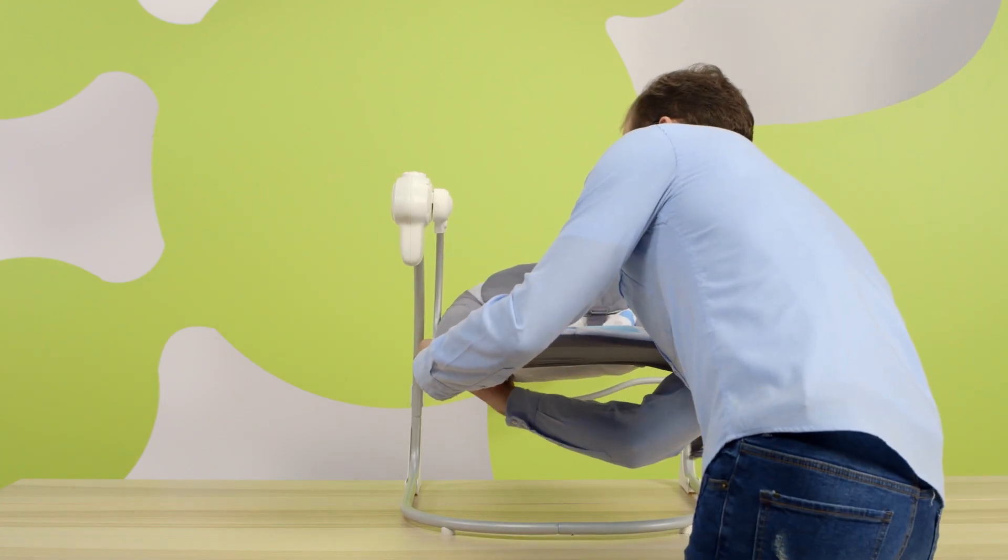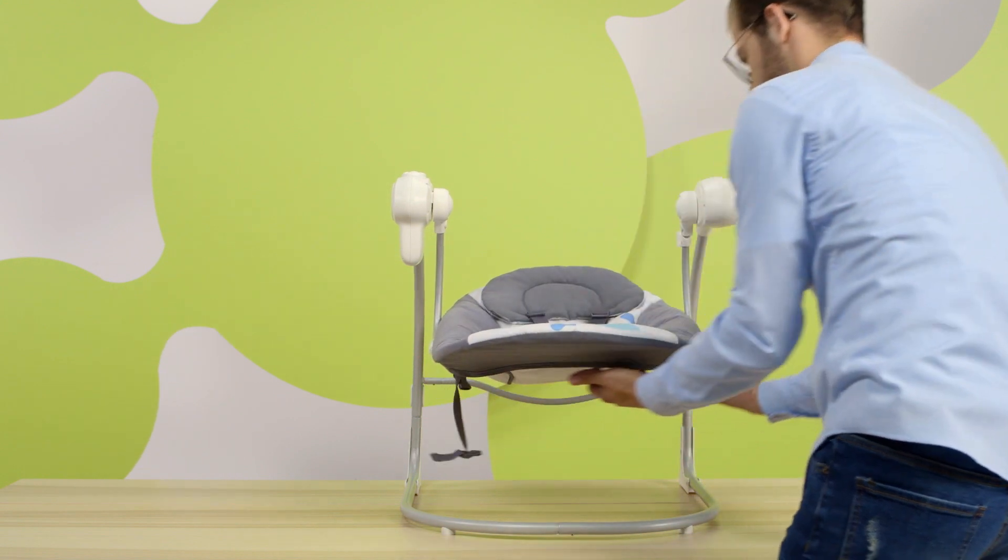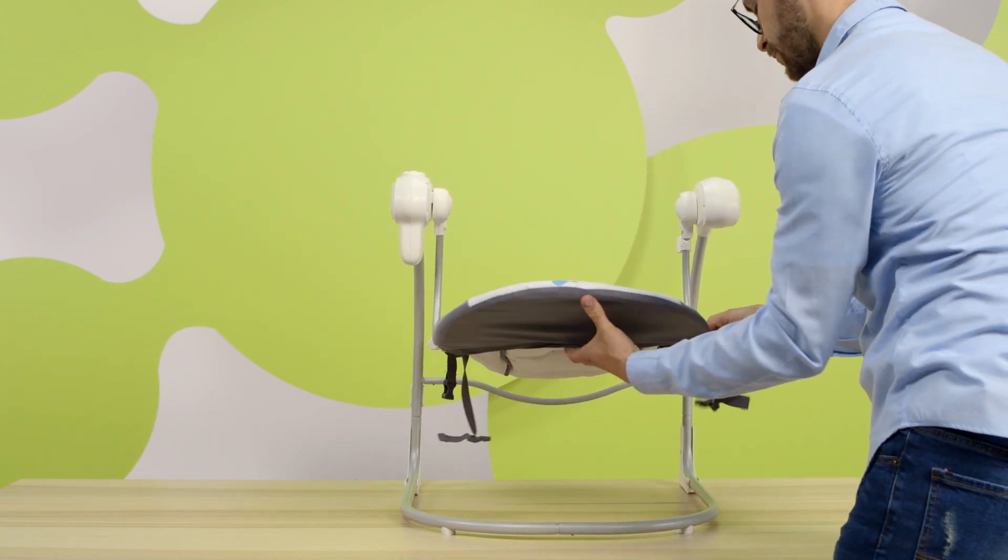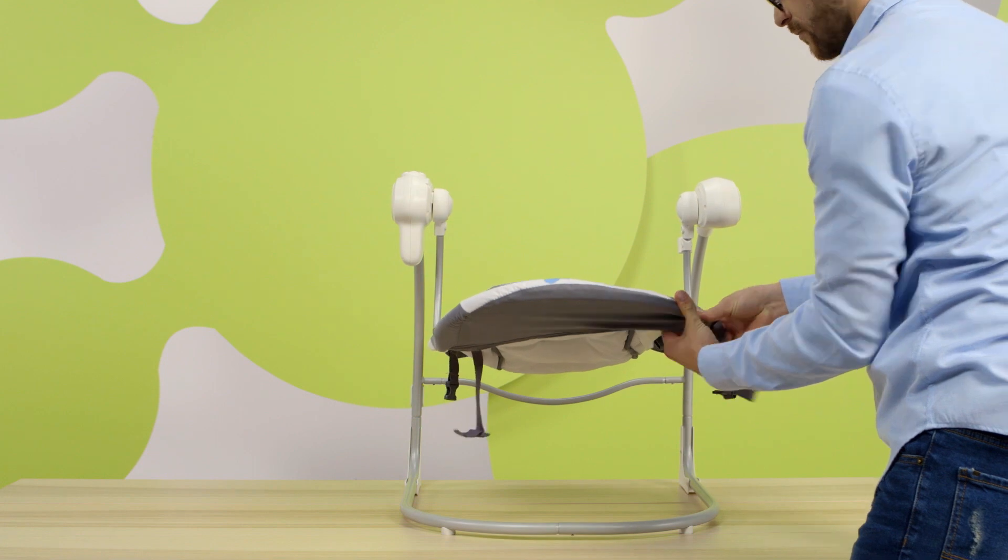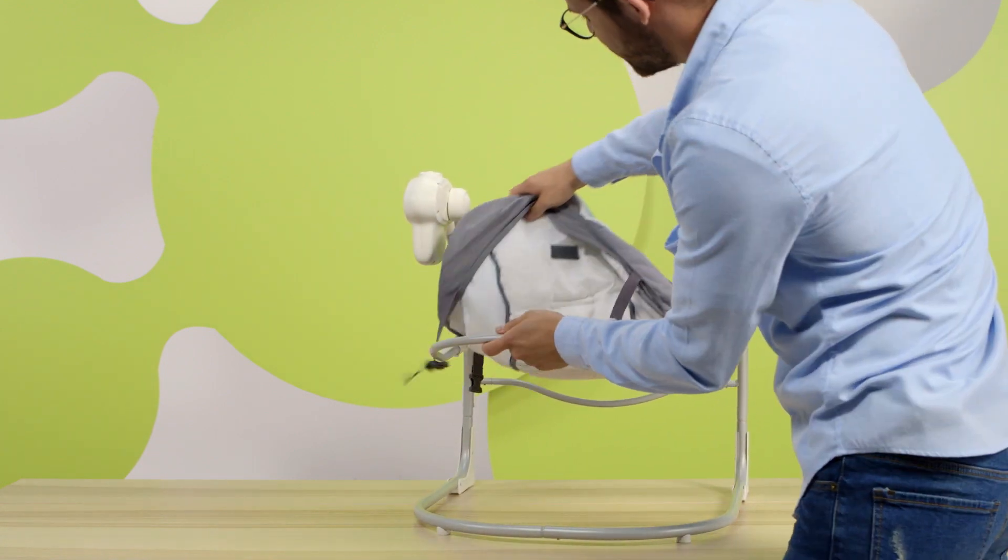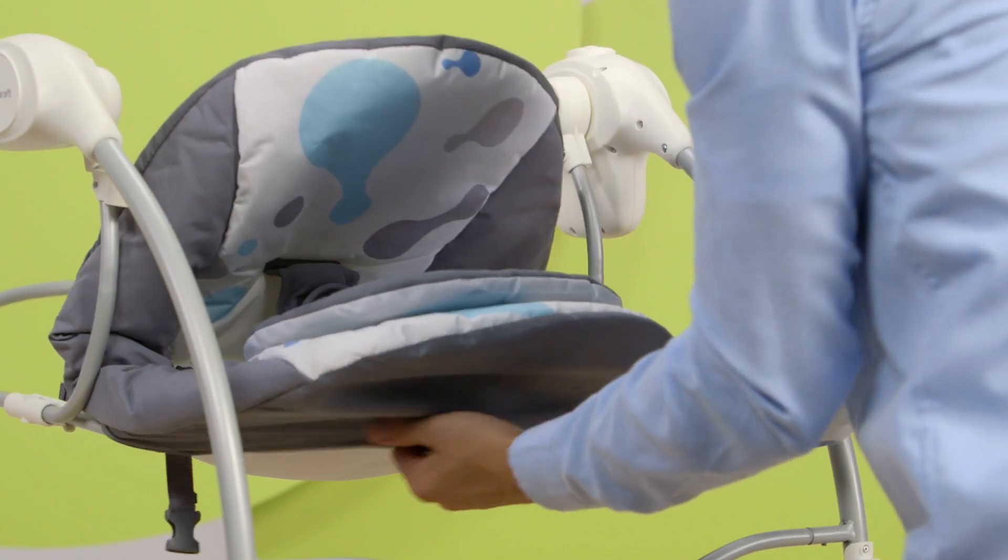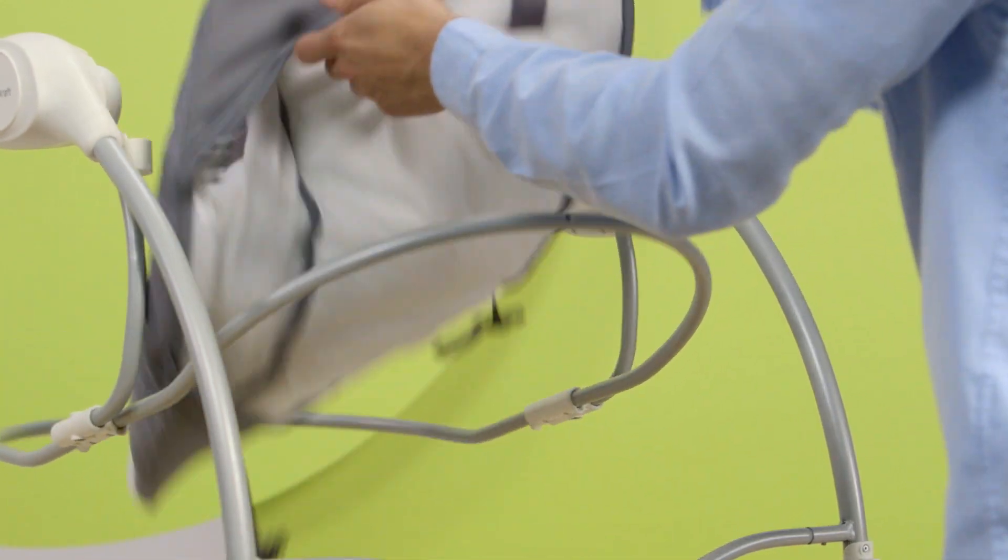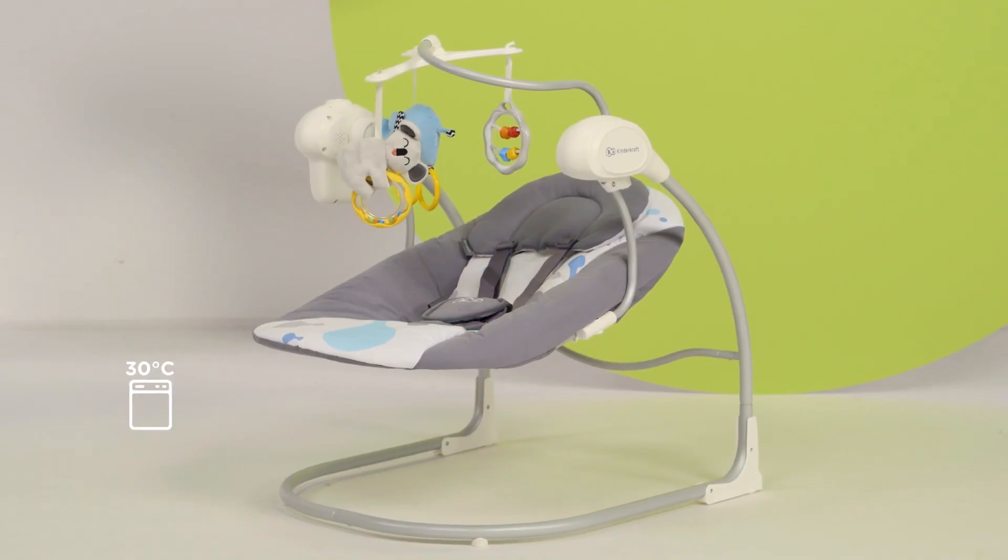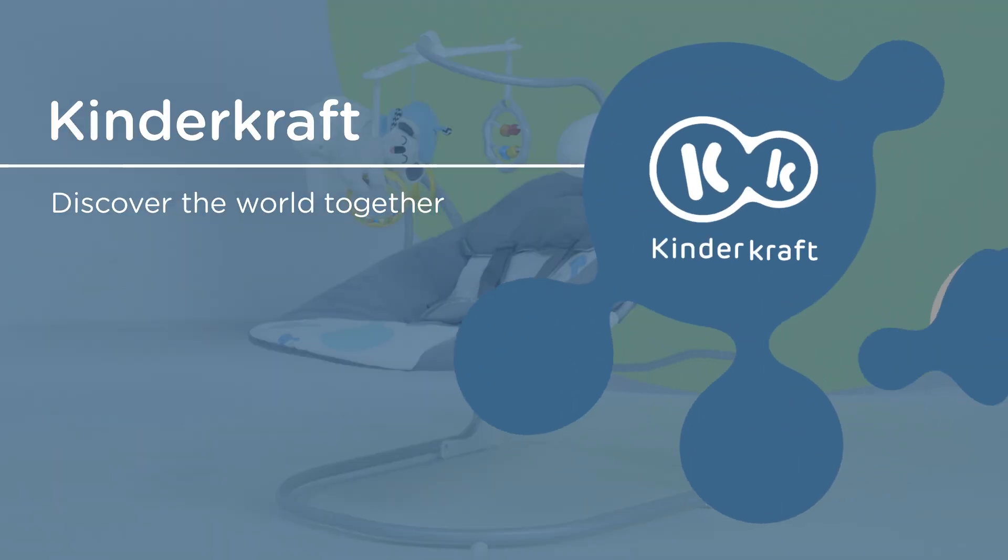To remove the cover for washing, unfasten the Velcro at the back and the buckles under the seat. Remove the cover from the seat and then from the backrest. Fasten the belts before putting them into the washing machine. Wash at 30 degrees Celsius. The rocker is ready to play.